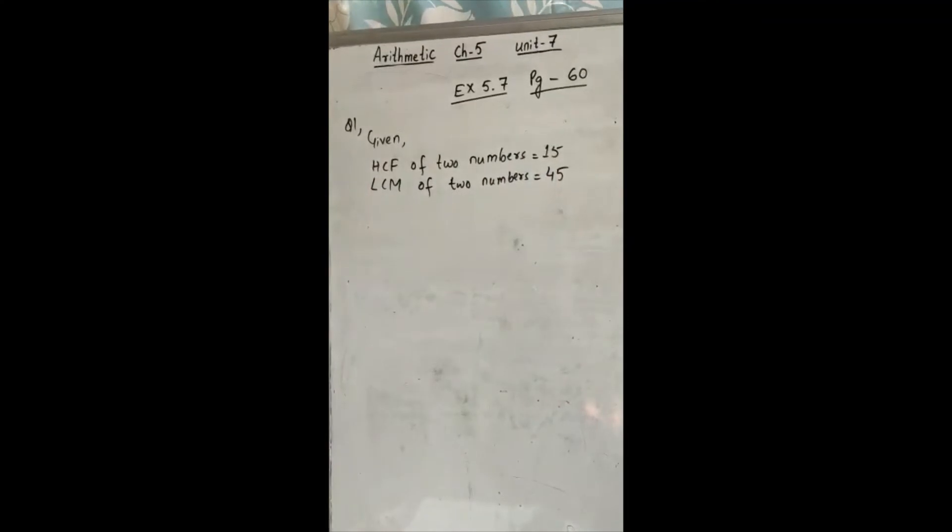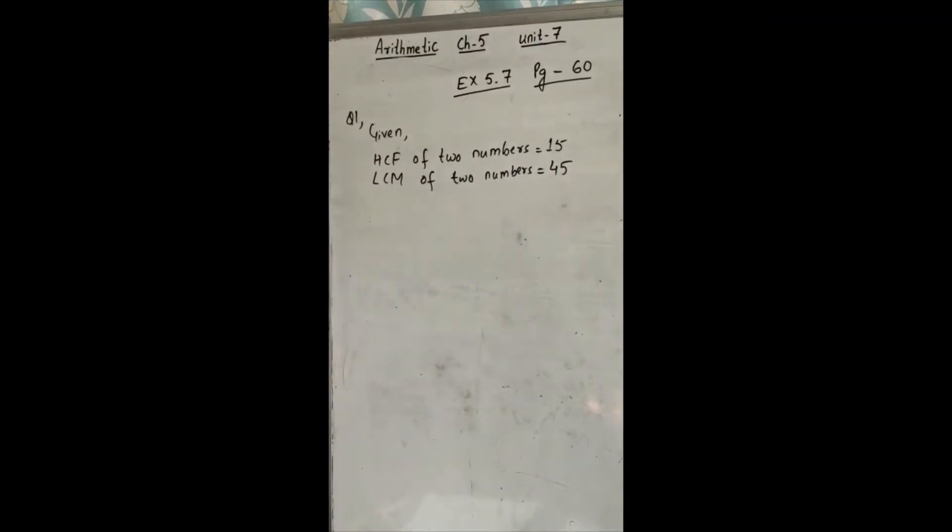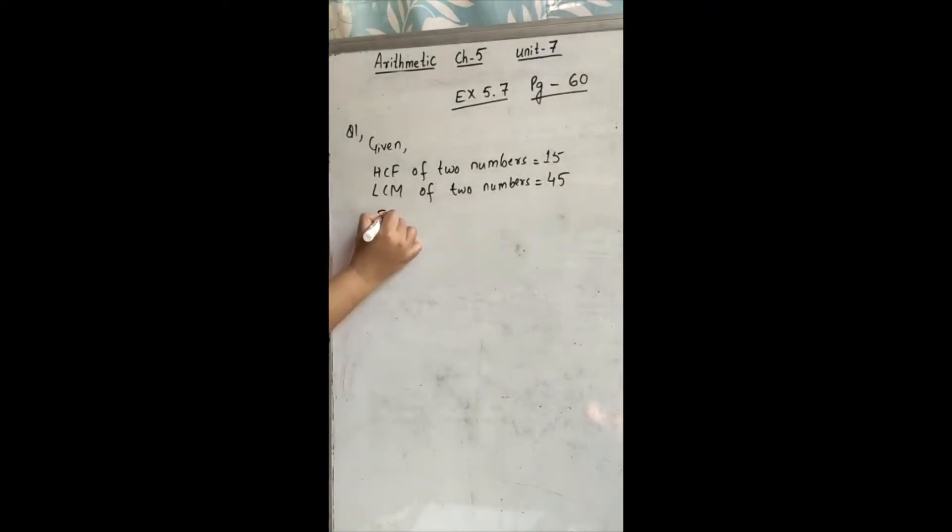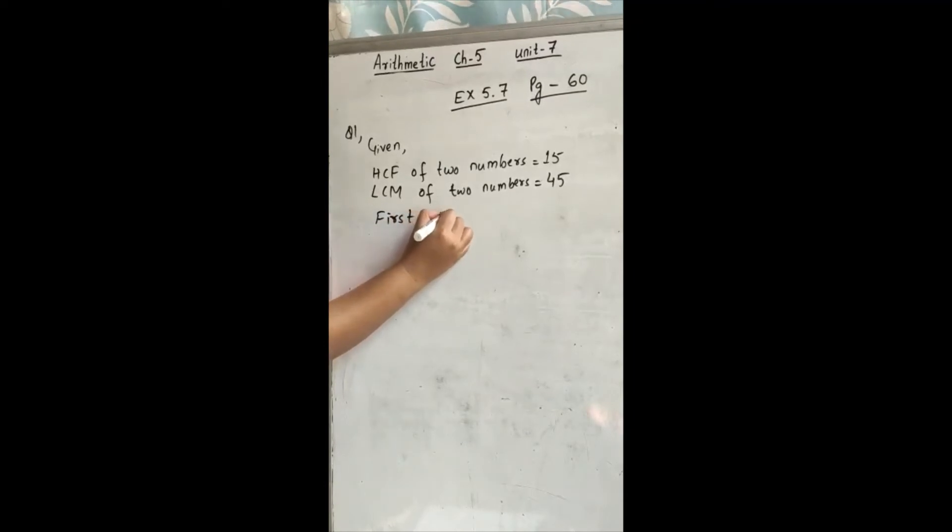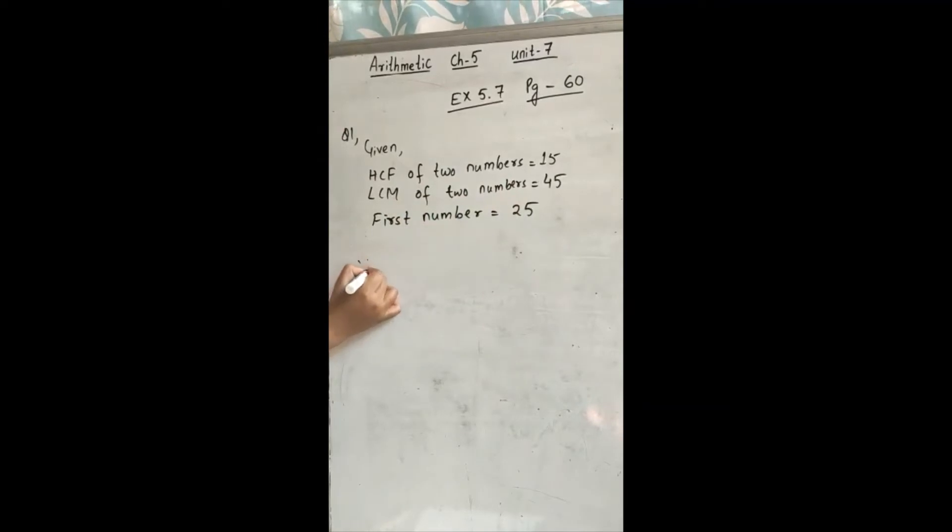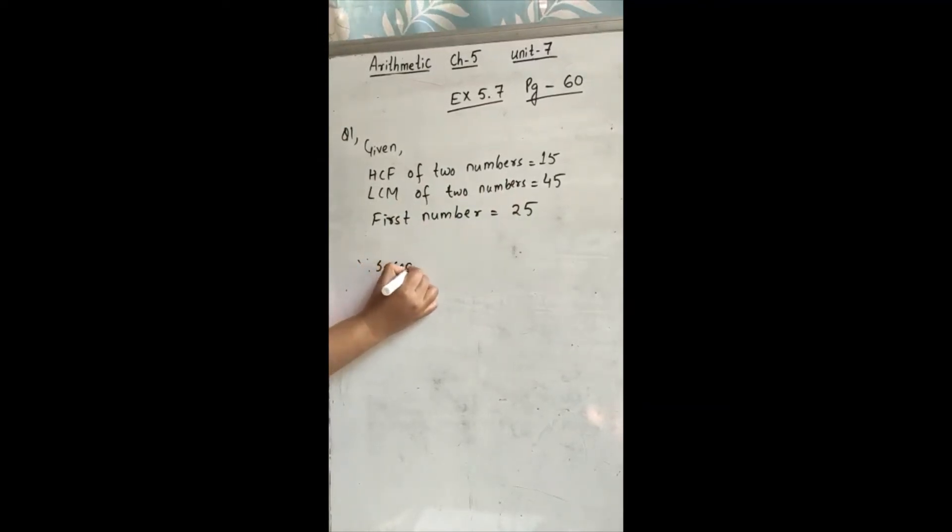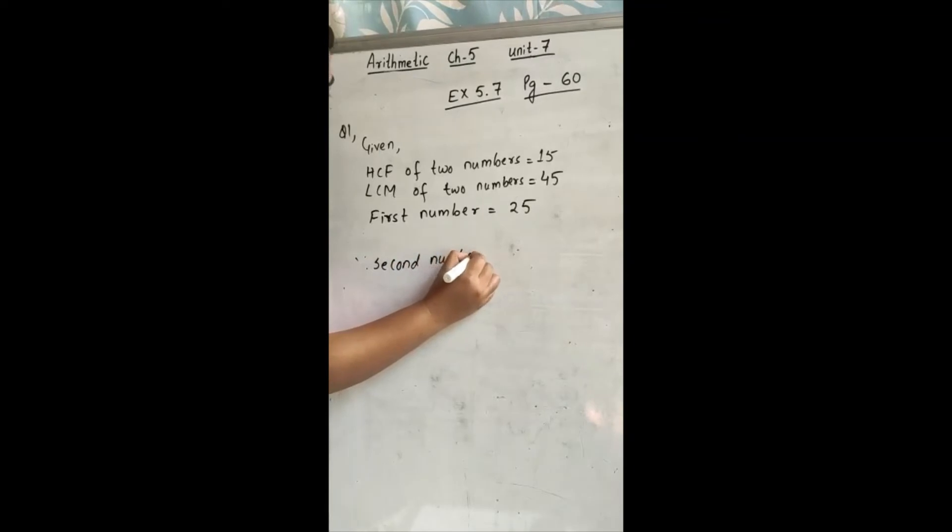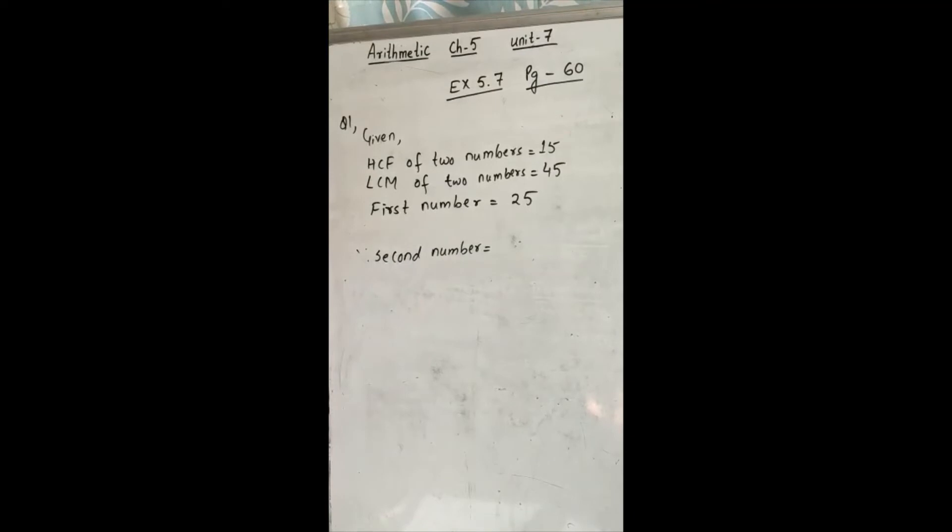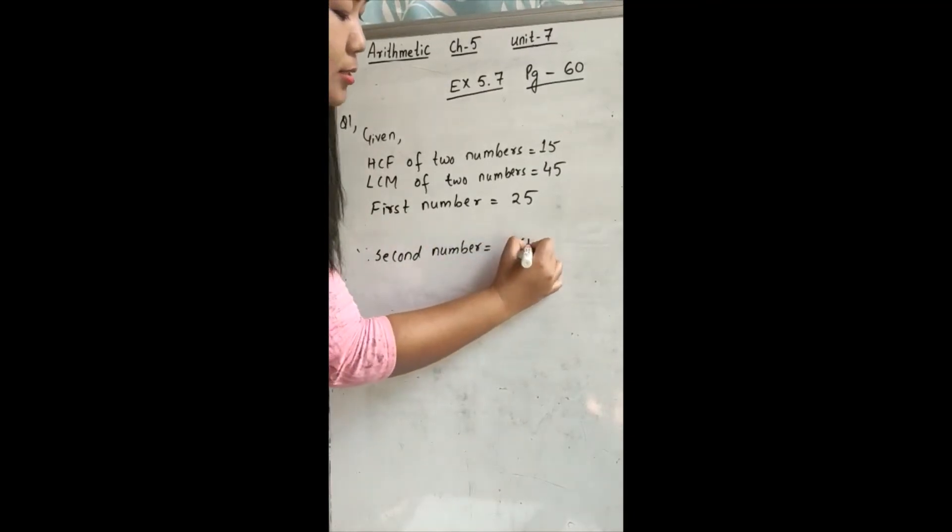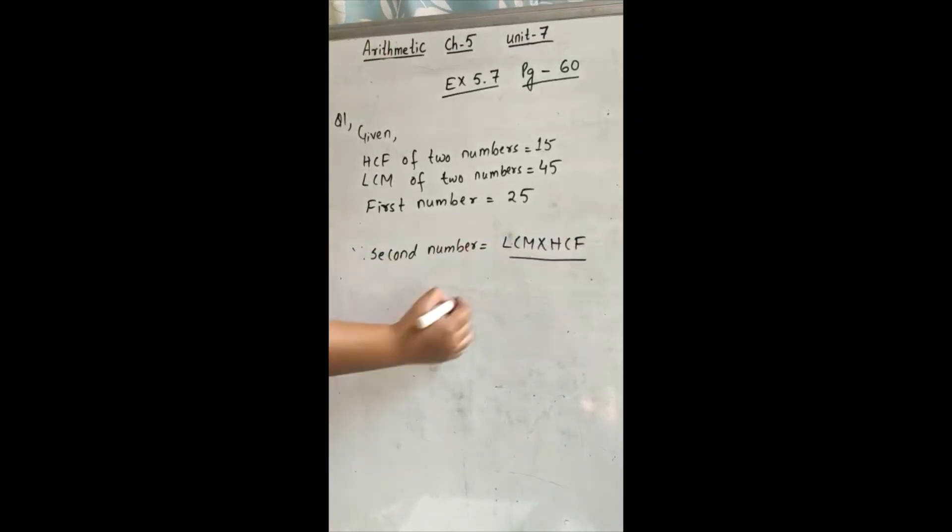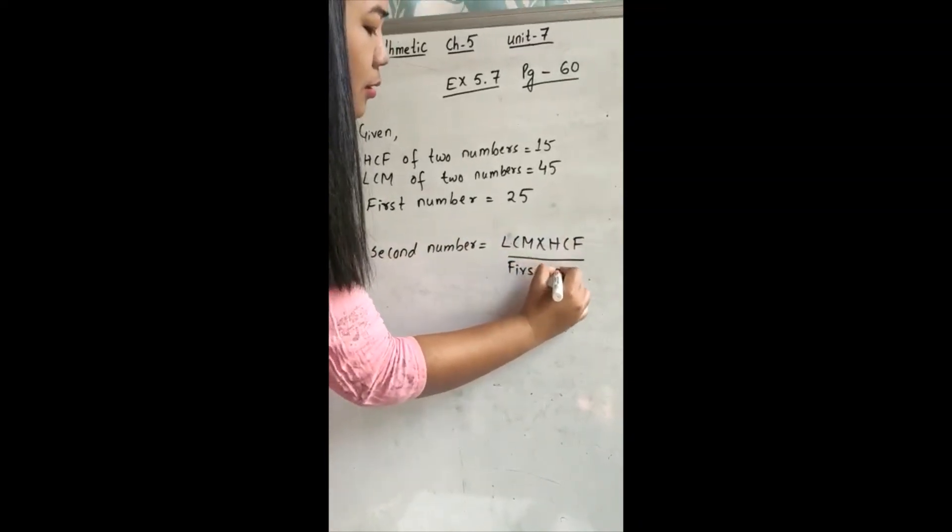Now another one number is given and we have to find the other number. So the first number is given 25. So we have to find what we have to find. We have to find second number. Now I have given you three things to remember. So what will be the formula of this one? LCM multiplied by HCF divided by the first number.